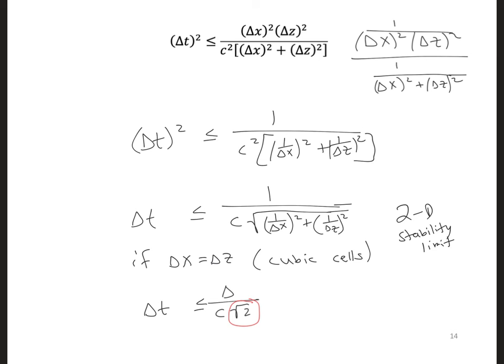So this means for two-dimensional simulations, s must be less than or equal to 1 over square root of 2.